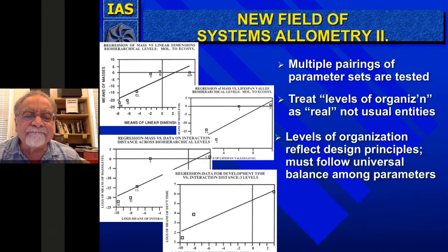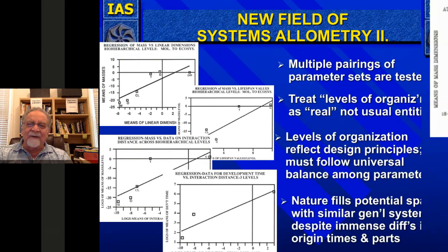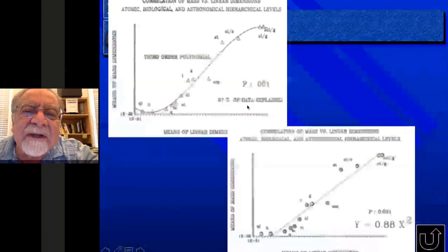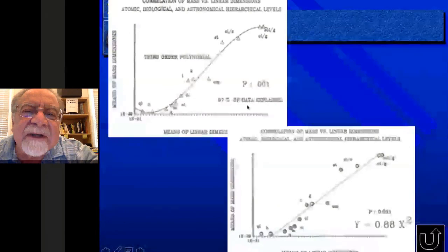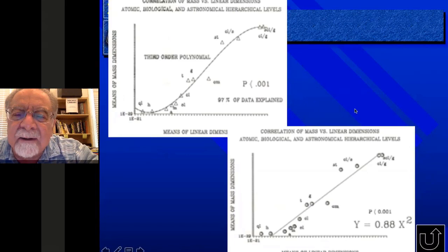The design of a new system is not totally independent of its emergent level — the data is related, which is incredible. If you put these in a third-order polynomial — the criticism being that you can match any data to a multi-parameter polynomial — but with probability less than 0.001, that means 97% of the data is explained. You get a correlation of mass versus linear dimensions in atomic, biological, and astronomical hierarchical levels, and here you get an allometric equation including all of those things. This has never been reported before anyplace else.